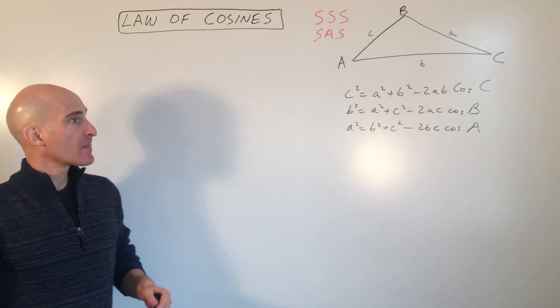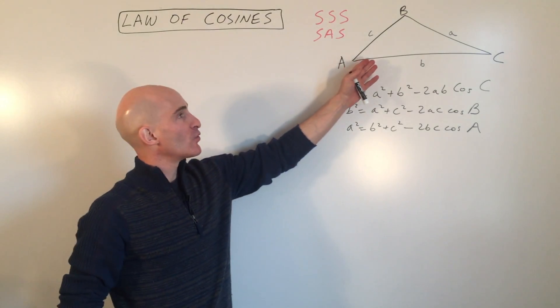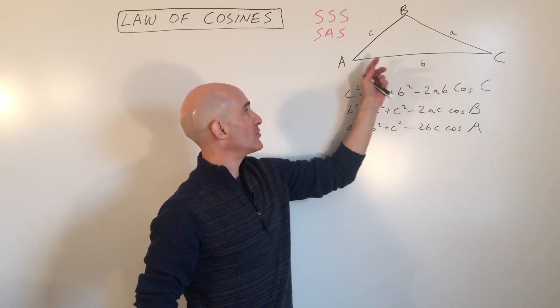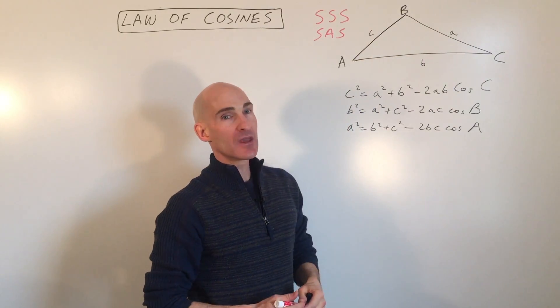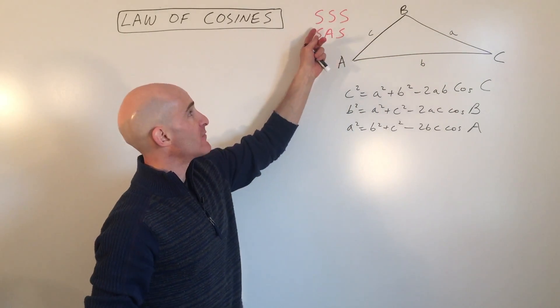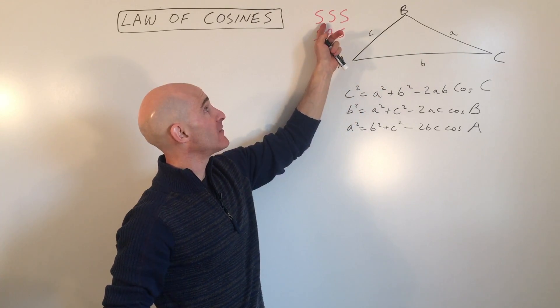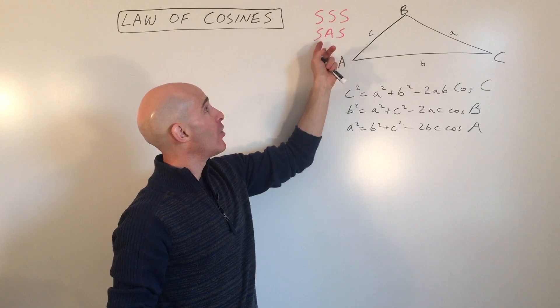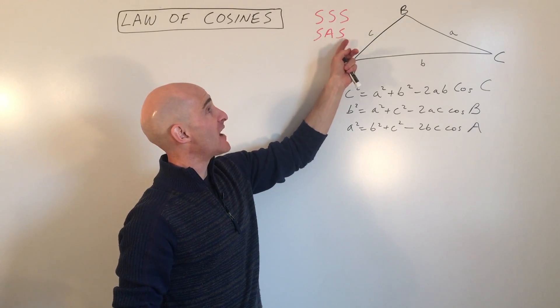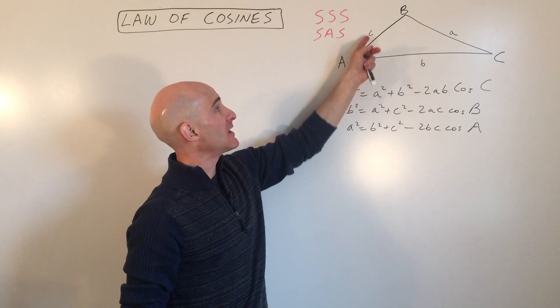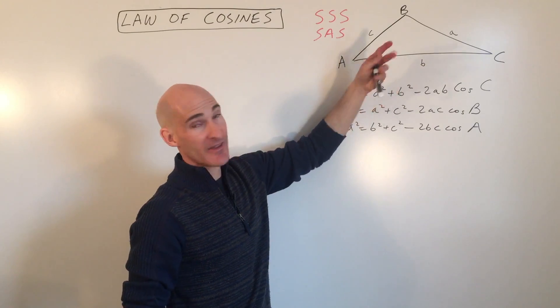So when do you use the law of cosines? Use the law of cosines when you have a non-right triangle, so you don't have a 90 degree angle. And the other time that you use law of cosines, in addition to not having a right angle, is if you are only given three sides, side side side, or side angle side. For example, the angle in between two sides, and that's all you know.